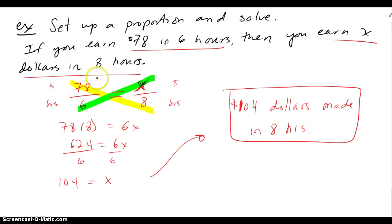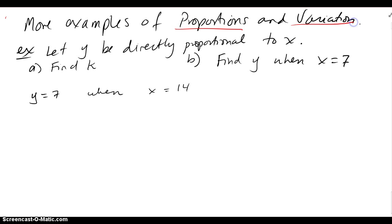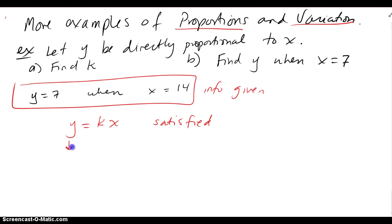Let's look at more examples of proportions and variation. It says, let Y be directly proportional to X, which is the same as saying Y varies directly as X. When they vary directly or they're proportional directly, it's the same idea. We have to find K and find Y when X equals 7. So this is the info given, and we know if Y is directly proportional to X, this must get satisfied: Y = KX. And with the info given, I can find the missing K. So Y is 7, K we don't know, and X is 14, which helps me find K to be 1/2.